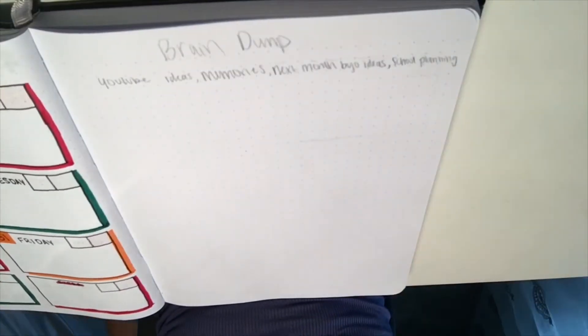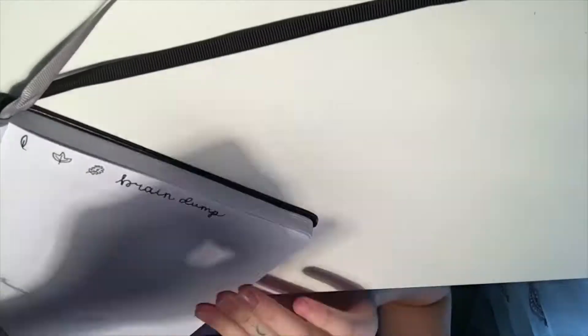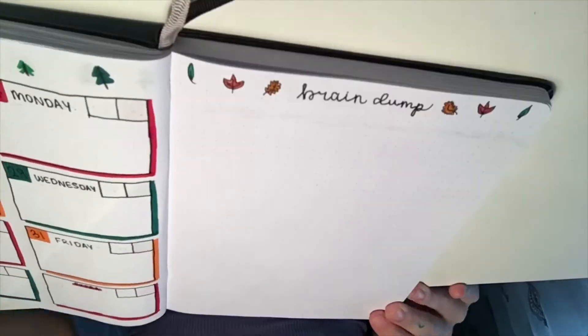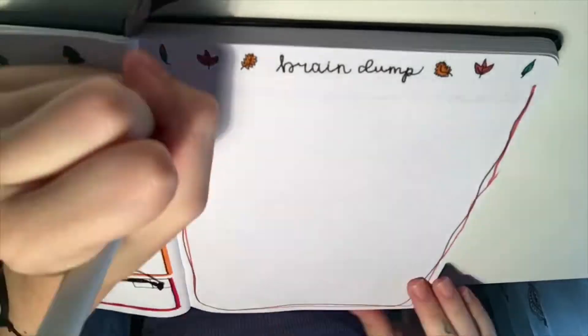For my last spread, I have a page for a brain dump. Here I'll jot notes, YouTube ideas, bullet journal ideas, school details, and August memories. I really like this spread because it's simple but still involves the theme.